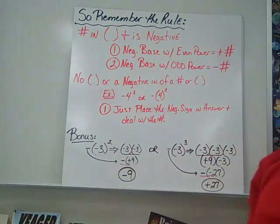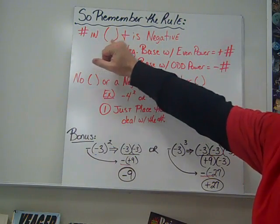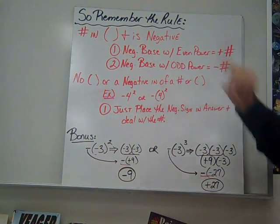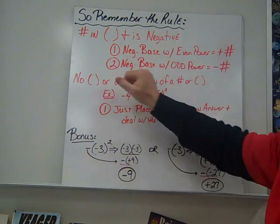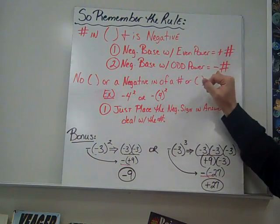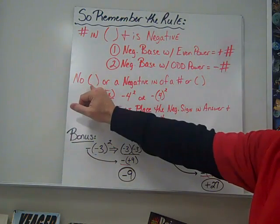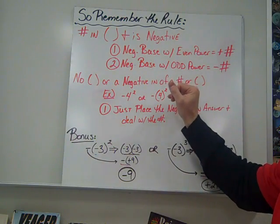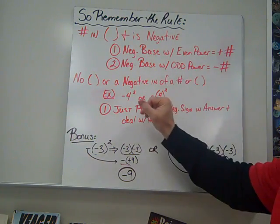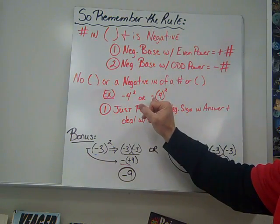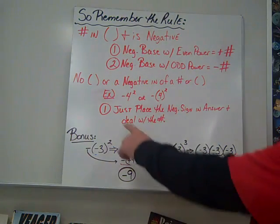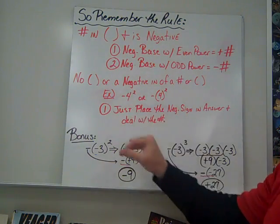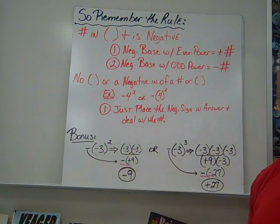So remember the rule. Number in parentheses and is negative. So we have a negative base with an even power, positive answer. Negative base with an odd power, negative answer. No parentheses or a negative in front of a number or parentheses. This is the scenario you have. Again, just place the negative sign in the answer and deal with the number. So drop your negative in, square, or take the number by the power.